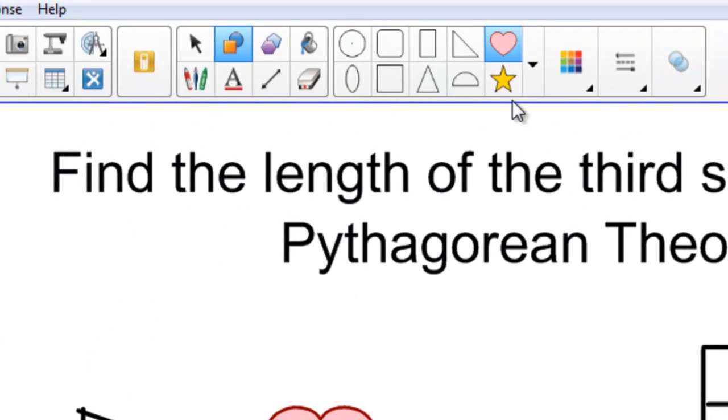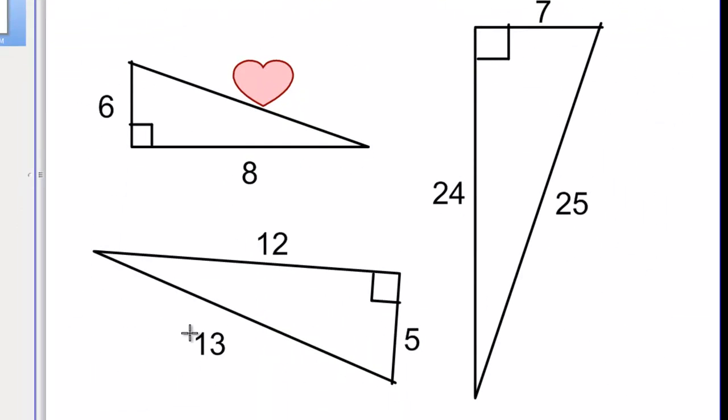As another example, I might pick the star or I could pick even a rectangle. Maybe I'll pick the star. I'll draw a star. This time, I think I'll cover up the 12 because I don't want all of the problems to be alike.